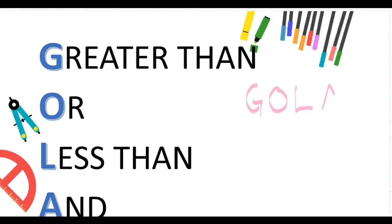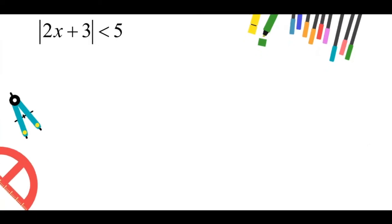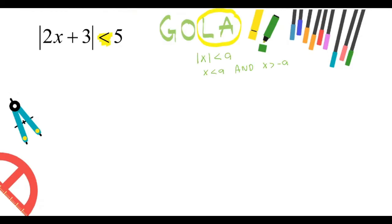Let's recap: GO means greater than, LA means less than. Applying GOLA, since the inequality sign is less than, we use LA. LA means: absolute value of x less than a can be defined as x less than a and x greater than minus a. Therefore for this question, absolute value of 2x plus 3 less than 5 is defined as: 2x plus 3 less than 5 and 2x plus 3 greater than minus 5.